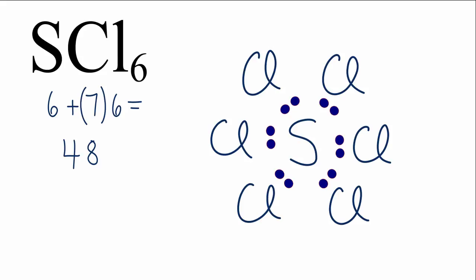Sulfur is an exception to the octet rule. It doesn't have to have 8. It's in period 3 on the periodic table. And those elements, period 3 and below, they can have an expanded octet. So we're okay there.